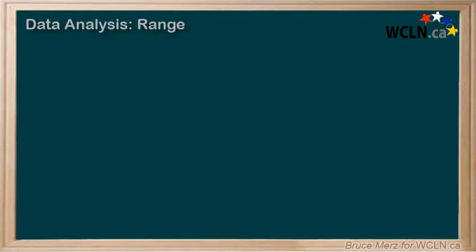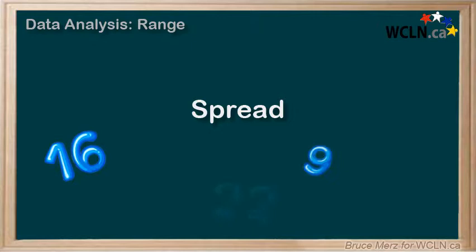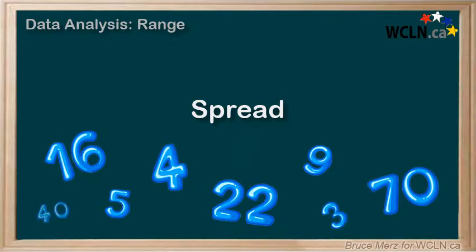When talking about averages like the mean, we often talk about the spread of numbers, as in are they all spread out or are they all quite close to the mean. We give this spread the name the range.